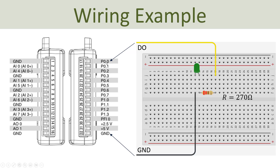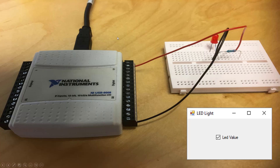We only need to use one digital channel, and it has to be a digital output channel — that's something we specify in our application, whether it should be a digital input or digital output channel. Here you see the physical wiring: we have the breadboard, the LED, the resistor, and the DAQ device. This connector is ground — the black wire is connected to ground, while the red one is connected to port zero, channel zero, which is the first connector.